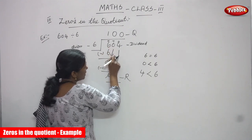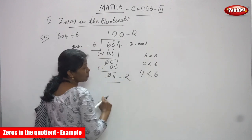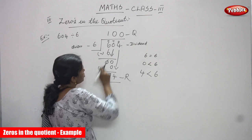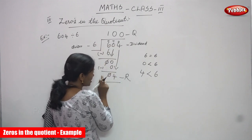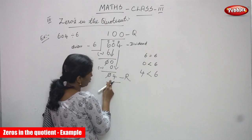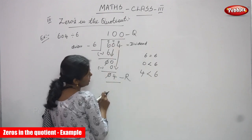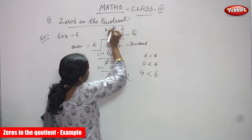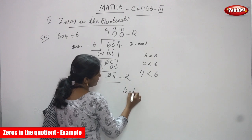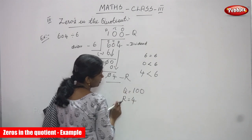Bring down the 10's place value — that number is 0. 0 is compared with 6. 0 is less than 6, so it is not enough to divide by 6. Put 0 in the quotient place. 0 into 6 is 0, and 0 minus 0 is 0 — cancel the 0. Bring down the next digit, which is 4. 4 is compared with 6. 4 is less than 6 — not enough to divide. Put 0 in the quotient place. So the quotient is 100 and the remainder is 4.